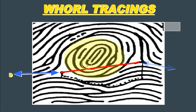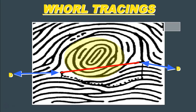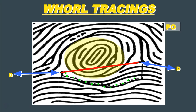Now let's look at another plain whorl. We have our delta on the left and our delta on the right, and an imaginary line between them crosses a circular formation, confirming it's a plain whorl. Starting our tracing at the left delta, when the ridge stops we drop down, and at bifurcations we follow the lower fork. When we reach a point closest to the right delta, we count one, two, three ridges — and these ridges are outside or farther from the core than the delta itself. So this is a plain whorl with an outer tracing: P and O.